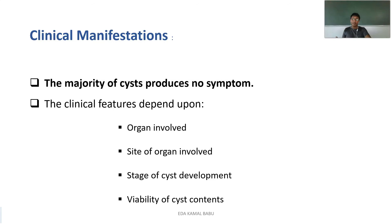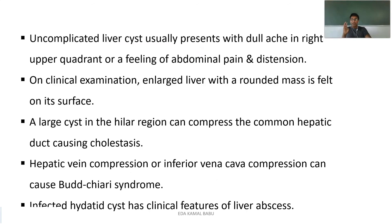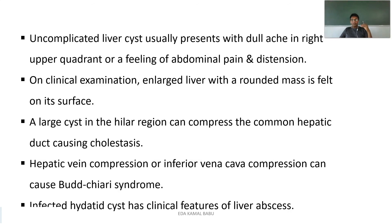An uncomplicated liver cyst is usually present with a dull ache in the right upper quadrant, feeling of abdominal pain, or distension. On clinical examination, you can find an enlarged liver with a rounded mass that is palpable on the surface. A large cyst in the hilar region can compress the common hepatic duct causing cholestasis.